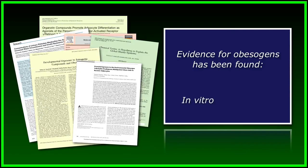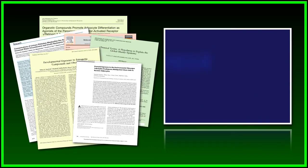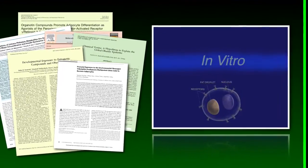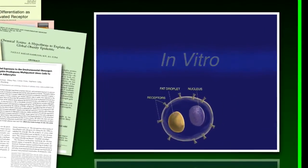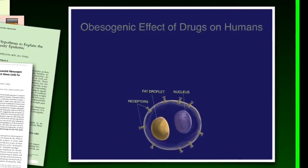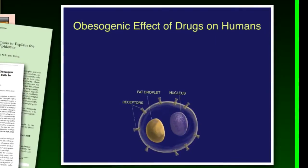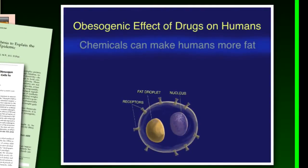There are in vitro effects we can see in cells, as well as in vivo effects we see in organs and in whole animals, including other mammals. We already know that there are chemicals that, when given to human beings, shift the body's lipid balance towards storing more fat.